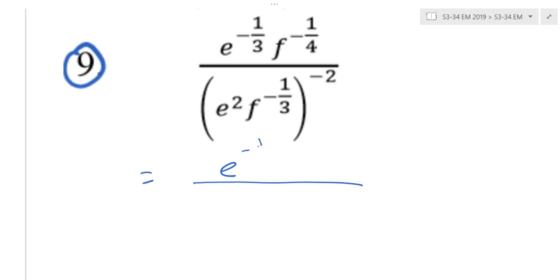So on top, I copy. Understand? Below, what do I get? E negative 4, F 2 thirds.